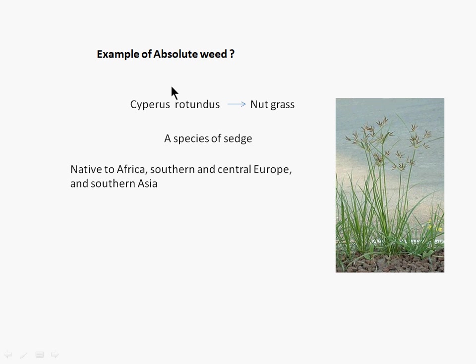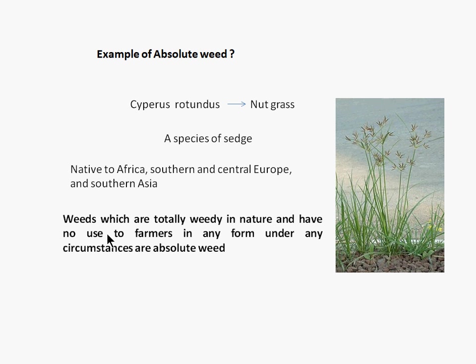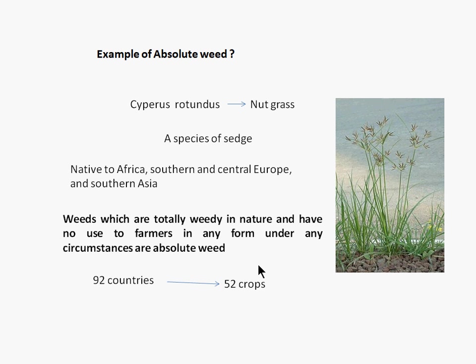Here the confusion is: what is an absolute weed? By definition, it is totally a weed in nature — it is not going to be used by the farmer in any form or in any circumstances. It is not going to be helpful for the farmer in any circumstances. That's why it is called an absolute weed. If you see the problem across the world, it is affecting about 22 countries in 52 crops. So it is one of the most problematic weeds and it is ranked number one.